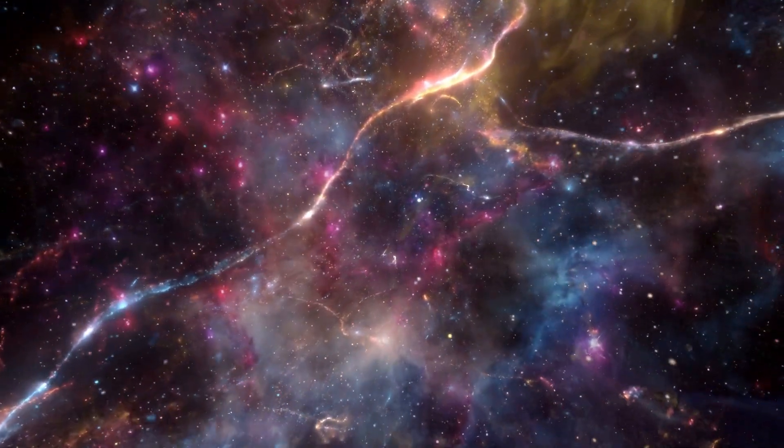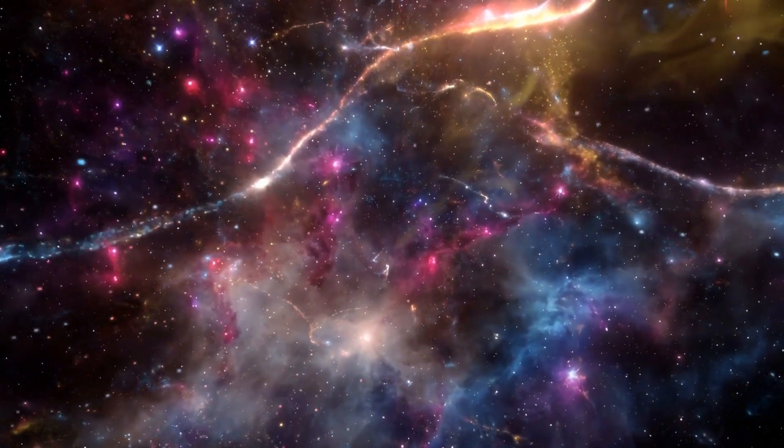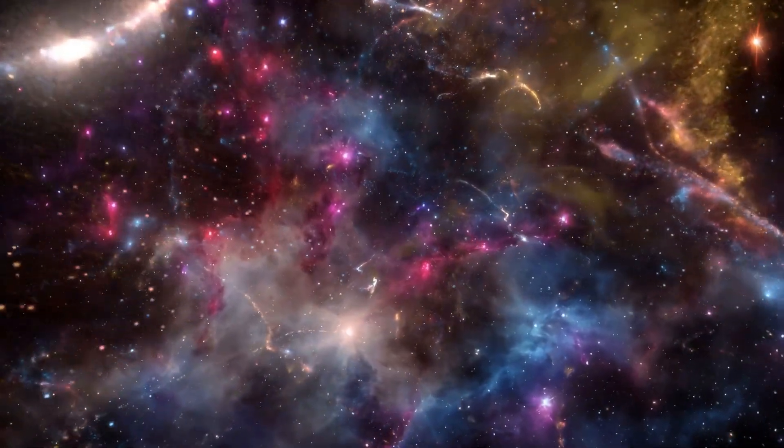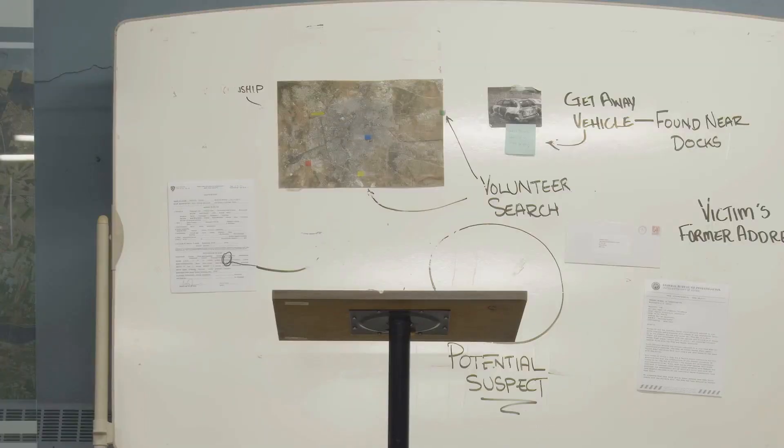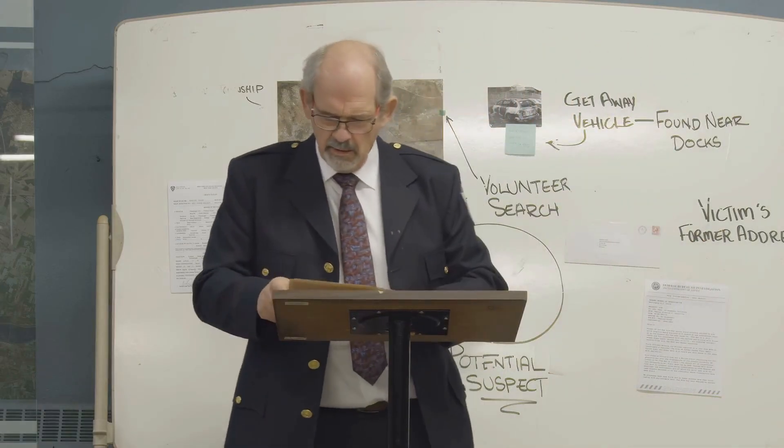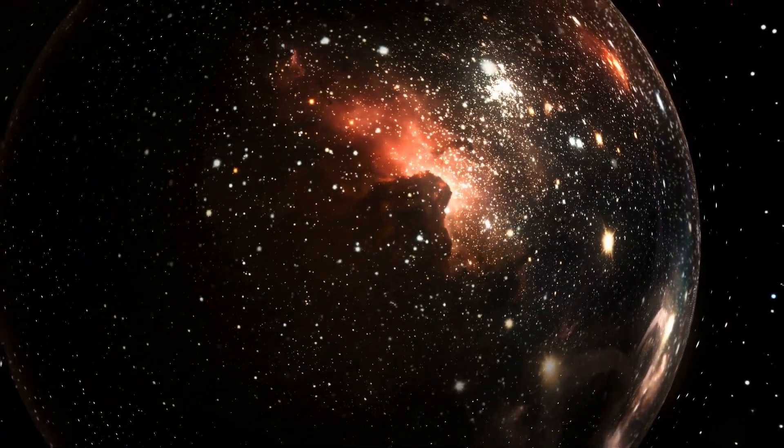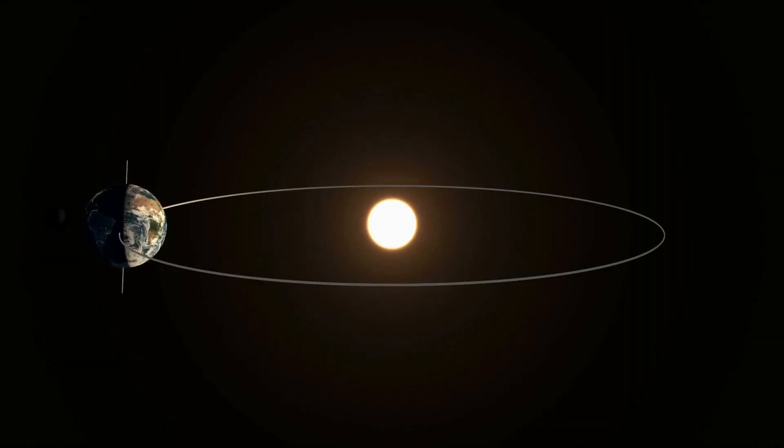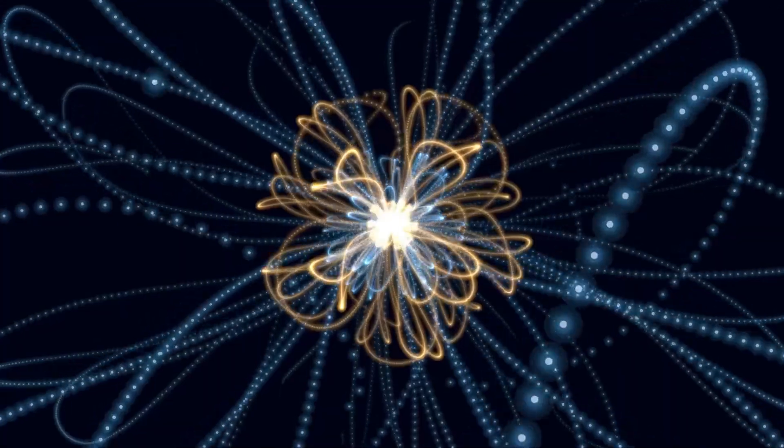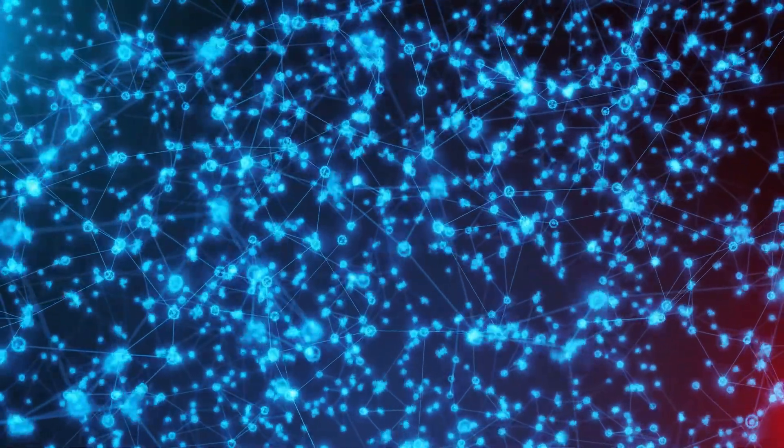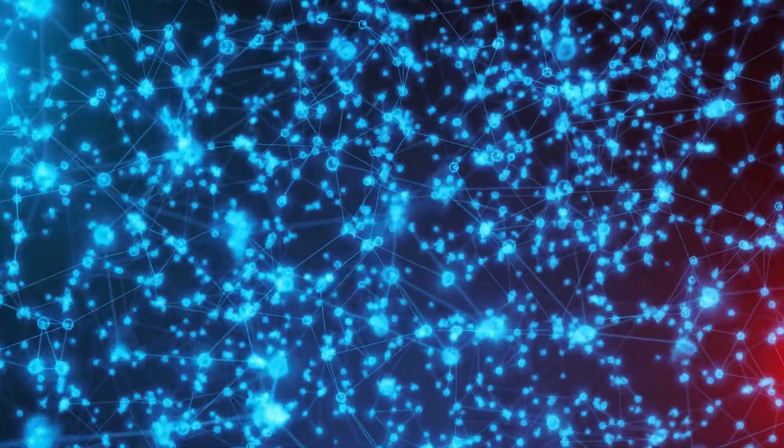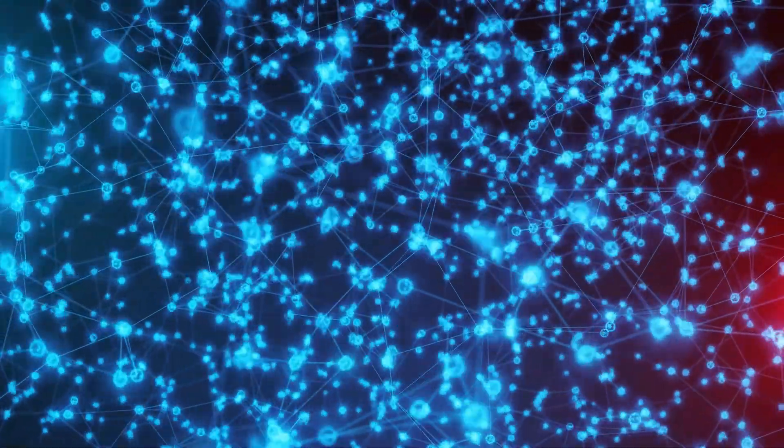This cosmic collection of possibilities is called the string theory landscape. Leonard Susskind, one of string theory's architects, argues this landscape isn't a bug, it's a feature. If the multiverse contains all these possible universes, it's no surprise we find ourselves in one suitable for life. It's like asking why Earth is the perfect distance from the sun for liquid water. Out of all the planets in the galaxy, we naturally find ourselves on one where we can exist. But this explanatory power comes at a cost. With 10^500 possible universes, string theory can explain anything, which critics argue means it explains nothing. How do you test a theory that predicts everything is possible somewhere? This has led to fierce debates about whether string theory and its multiverse are science or philosophy dressed in mathematical clothing.